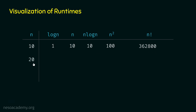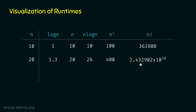Now let's say N is 20. Then log 20 (base 10) is 1.3, N is 20, N log N is 20 × 1.3 = 26, N² is 20² = 400, and N! is 2.432902 × 10¹⁸ — a very large value.